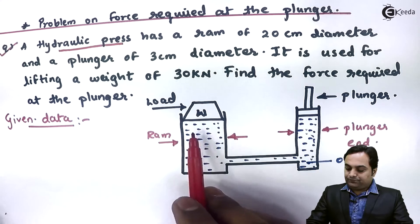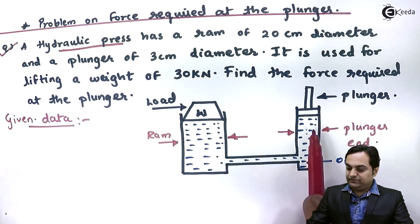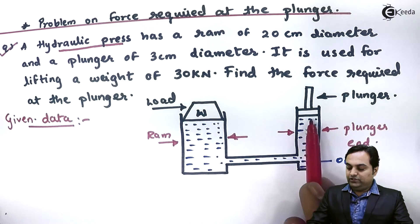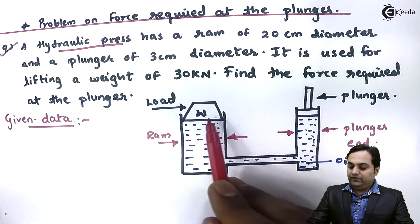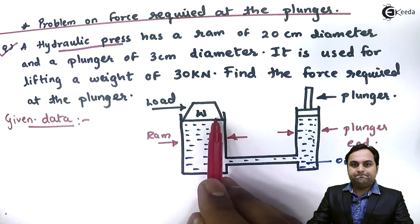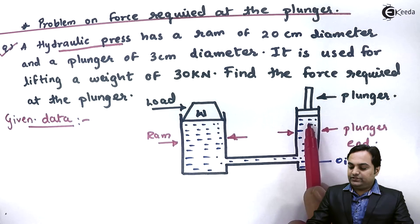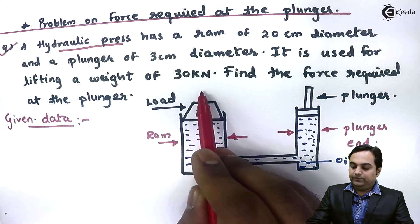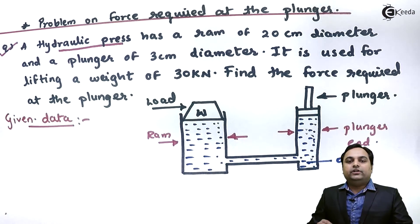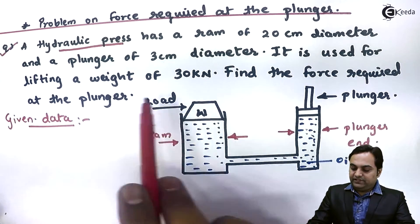In the case of a hydraulic press, the fluid being used is oil, as shown in blue — it is filled throughout the chamber. Whenever we want to lift a heavy load, it is kept on the RAM end, and at the plunger we apply a small force. This force is transmitted from the plunger through the oil to the RAM end, and finally the load is lifted. In other words, the force is transmitted through the fluid.